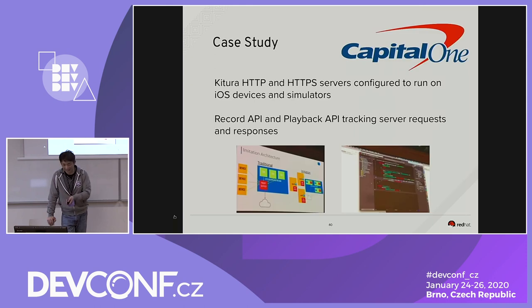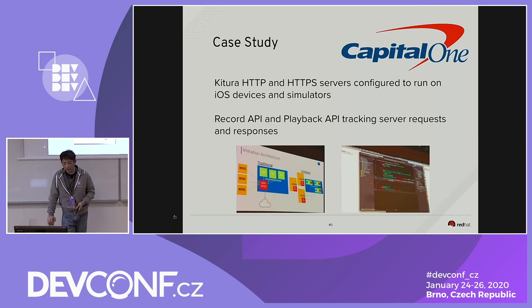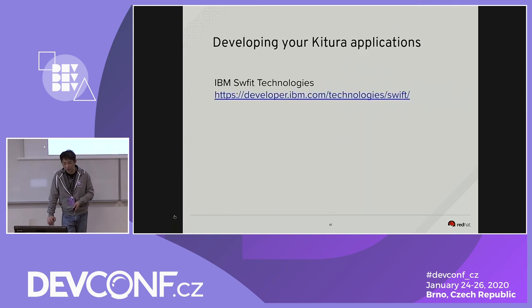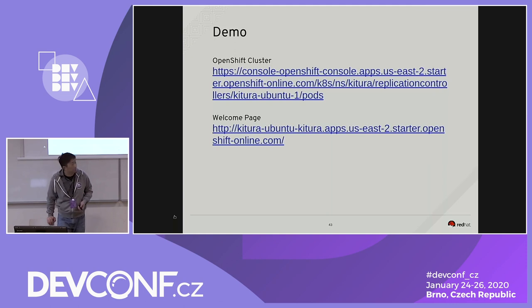We also have a client, Capital One, who is using Kitura for their project. Kitura HTTP/HTTPS server is configured to run on their iOS devices and simulator. We have a record API and a playback API to track service request and response using the Kitura framework — a really interesting project and the first time we used Kitura in the consulting business. You can go to developer.ibm.com/technologies/swift for more information, and we have five minutes left for a quick demo of how this works in OpenShift.